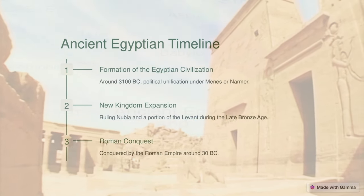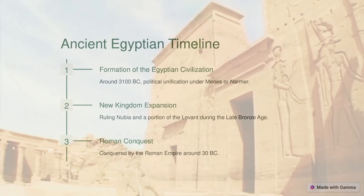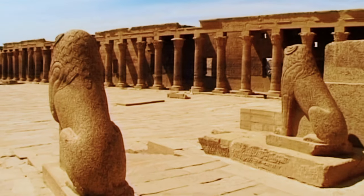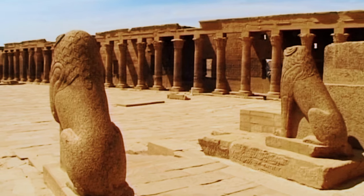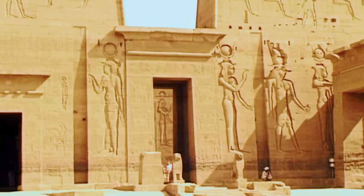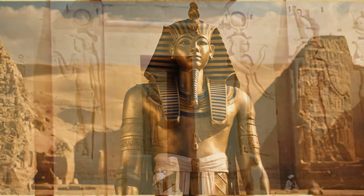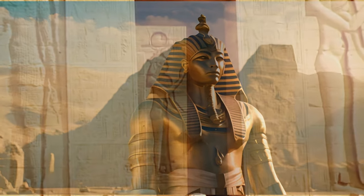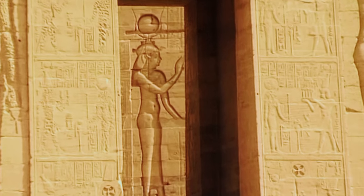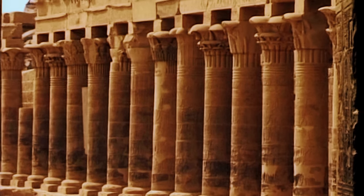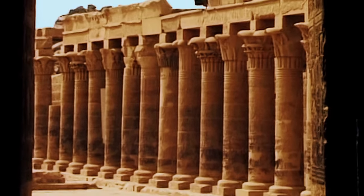Ancient Egypt was a civilization of ancient Northeast Africa, concentrated along the lower reaches of the Nile River, situated in the place that is now the country Egypt. Ancient Egyptian civilization followed prehistoric Egypt and coalesced around 3100 BC, according to conventional Egyptian chronology, with the political unification of Upper and Lower Egypt under Menes or Narmer. The history of ancient Egypt occurred as a series of stable kingdoms separated by periods of relative instability known as intermediate periods: the Old Kingdom of the Early Bronze Age, the Middle Kingdom of the Middle Bronze Age, and the New Kingdom of the Late Bronze Age.